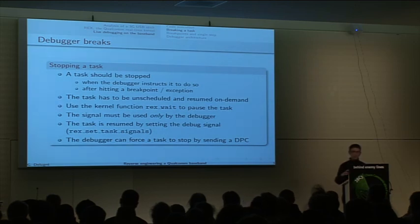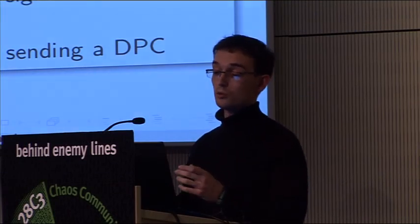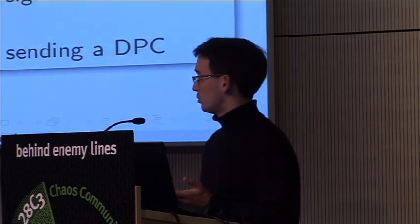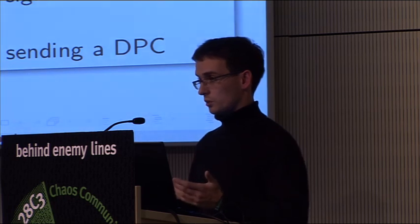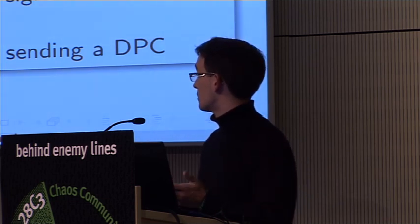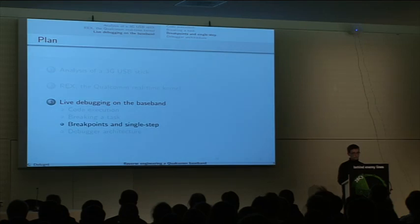What I do is execute a piece of code in the context of the task. I could patch the code of the task and redirect control flow, but the kernel directly offers an API to execute code in the context of another task via a DPC. So I create a DPC, send it to the task, and tell the task to wait for a specific signal.